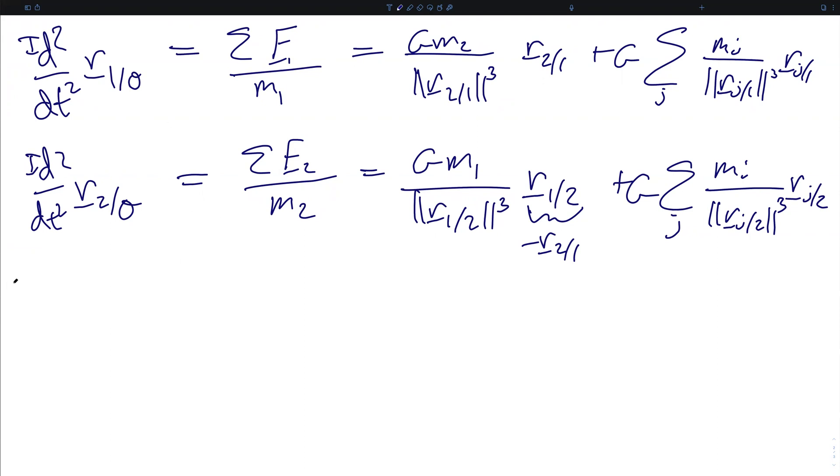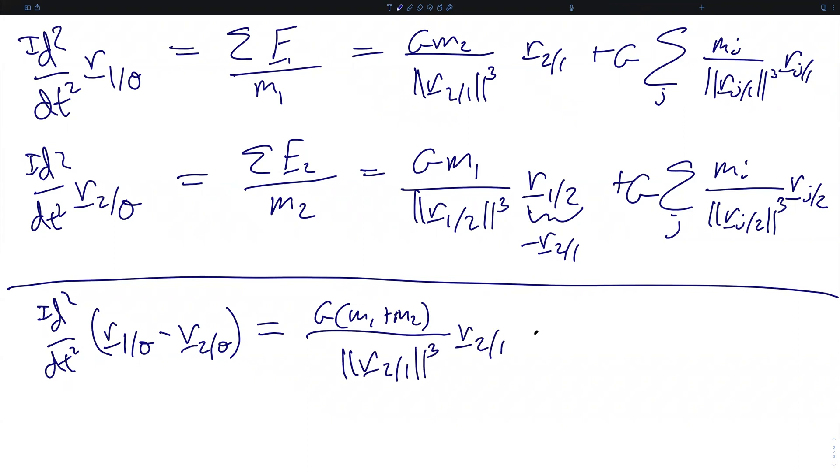We subtract these two equations, and we get the second derivative of R1 rel 0 minus R2 rel 0, which is R1 rel 2, is equal to gm1 plus m2, which we've previously defined as the gravitational parameter for the system composed of m1 and m2, divided by norm R2 rel 1 cubed. The norm, of course, is strictly positive, so these two quantities are exactly the same in the direction R2 rel 1.